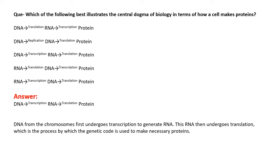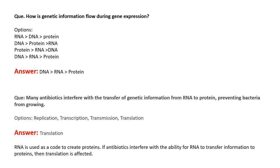For explanation: DNA from the chromosome first undergoes transcription to generate mRNA, and then this mRNA is used for protein synthesis by the process of translation, where the mRNA carries the genetic codes used for protein synthesis. The next question asks how genetic information flows during gene expression — again, the answer is DNA to RNA to protein.